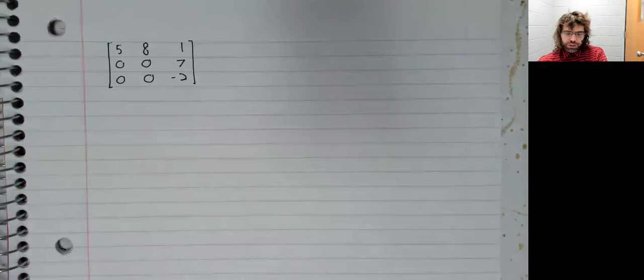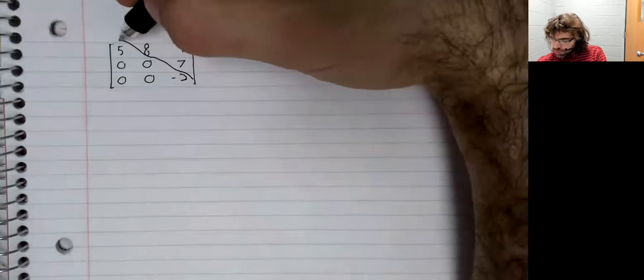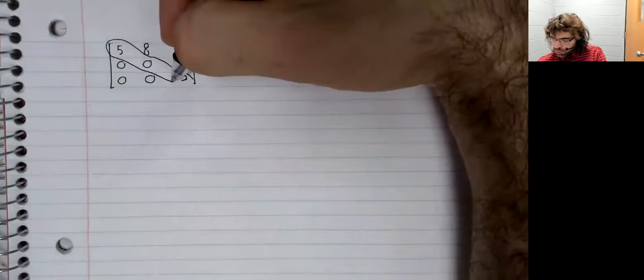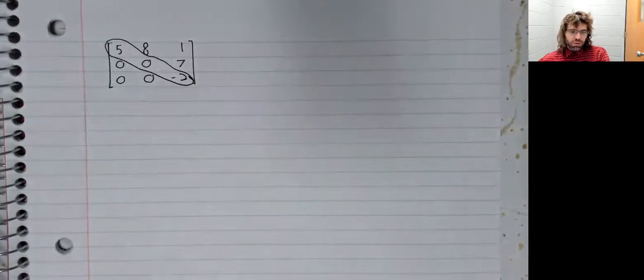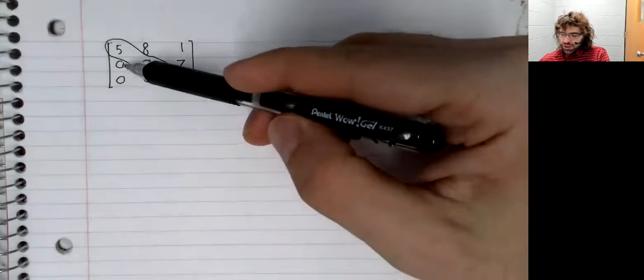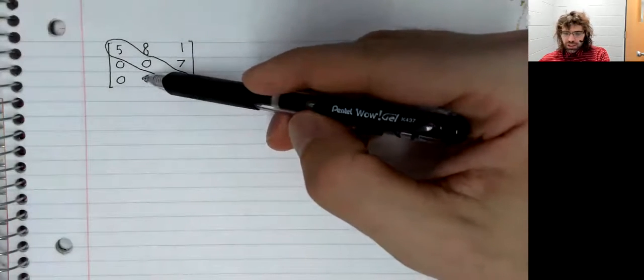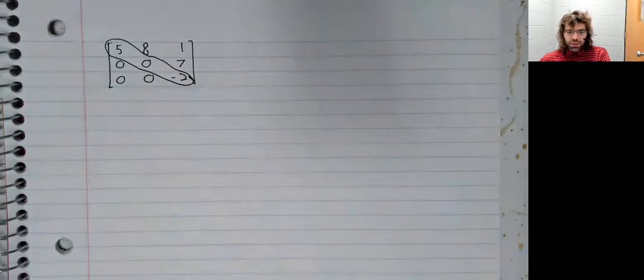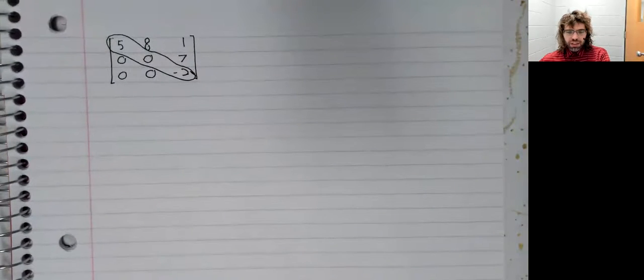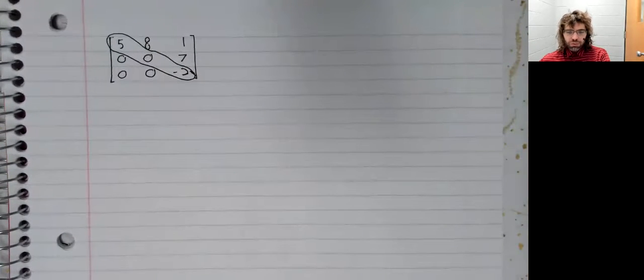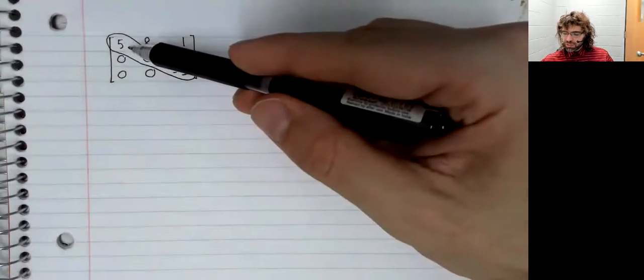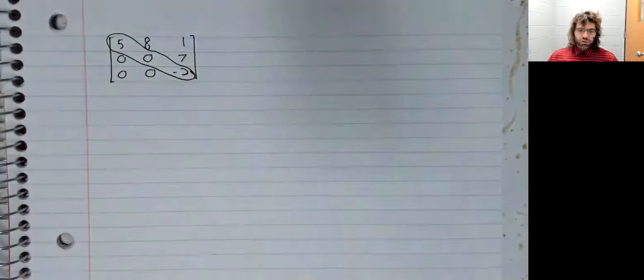So let's diagonalize this matrix, but we'll skate through some of the details. We'll start by observing that this matrix is triangular. Everything below the diagonal is zero, meaning we don't have to do any work finding the eigenvalues.